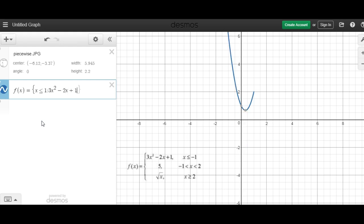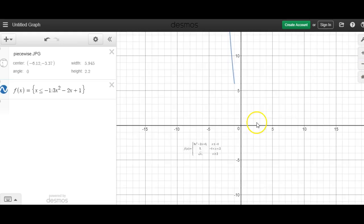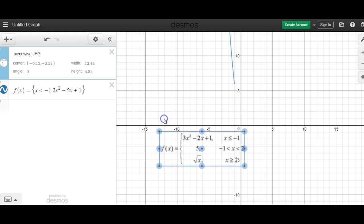And so in this region, x is less than or equal to 1, oops, that should be negative 1. I get this function 3x squared minus 2x plus 1, and zoom out a little bit so we can see that. Now let me blow this up again so we can see it.